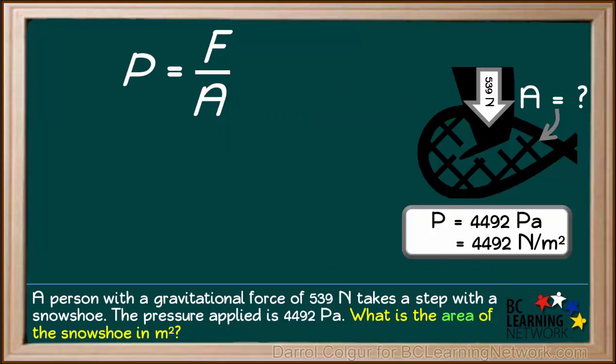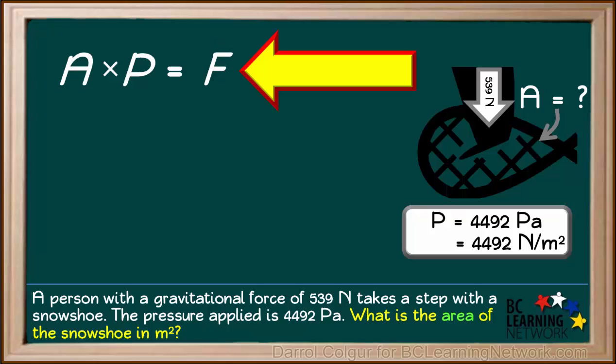We start by multiplying both sides of the equation by A. A is in the numerator and the denominator on the right side, so it can be cancelled out, leaving us with only F on the right side. So, we're left with the equation A times P equals F.